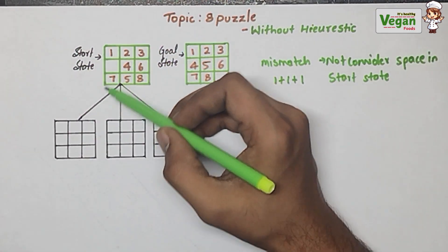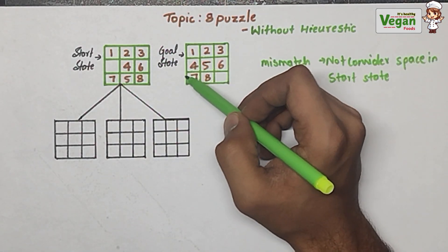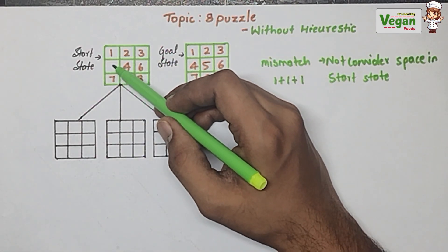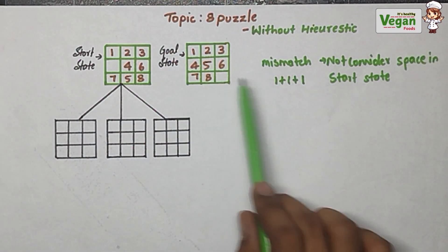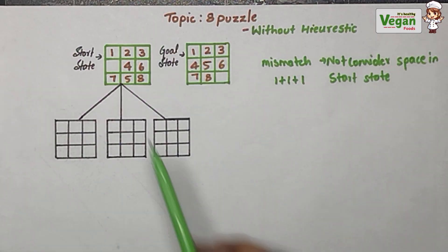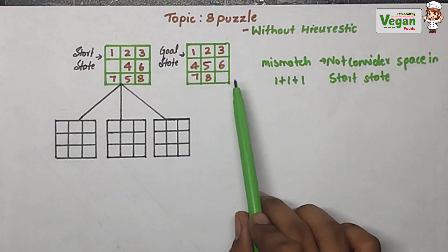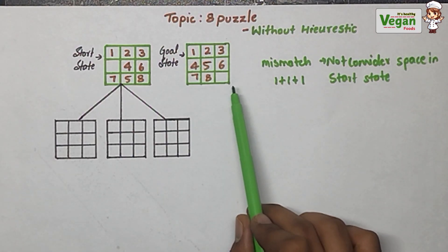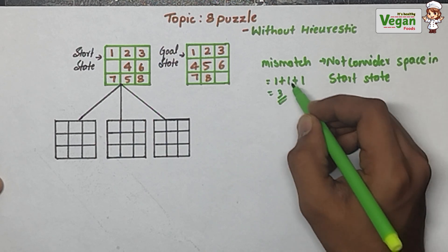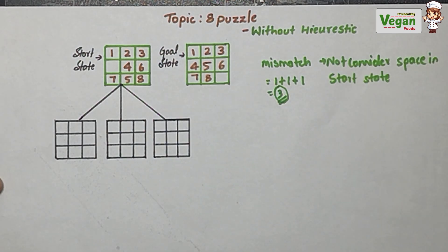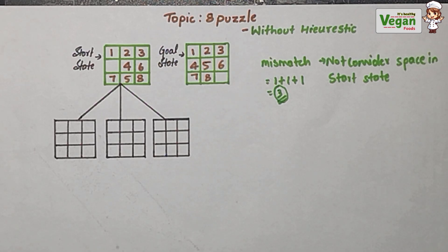If the space is in the start state, you must skip it and not add it to the mismatch. But if the space is in the goal state, you must add that mismatch. The total mismatch is 3, so this total of 3 mismatches can be called the heuristic value. However, in this video we are not using the heuristic value — the next problem will use it and that video link is given in the description.